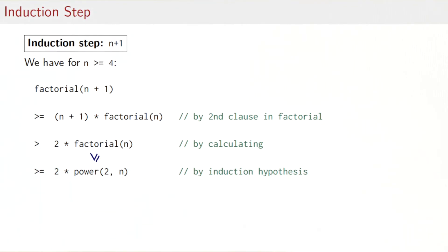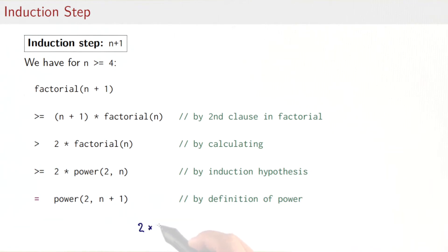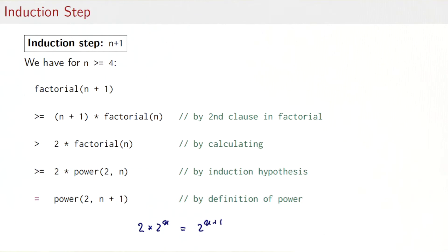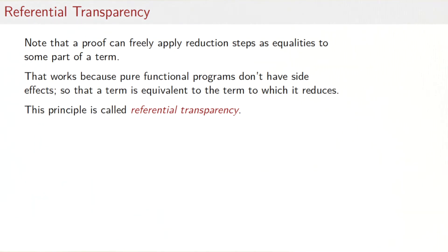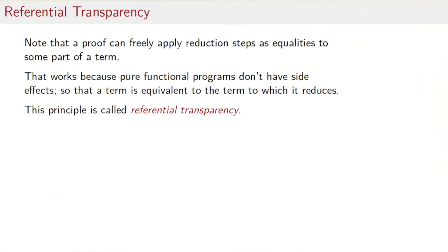Our induction hypothesis was that factorial(n) ≥ 2^n, and we can use it freely in our proof. Finally, we simplify: 2 * 2^n is the same as 2^(n+1). So factorial(n+1) is proven to be ≥ 2^(n+1), and the property holds for all integers n ≥ 4. One thing we've used here is applying reduction steps as equalities to parts of terms. That works because pure functional programs don't have side effects — reducing a term is equivalent to rewriting it. This principle is called referential transparency, an important tool for equational proofs of functional programs.